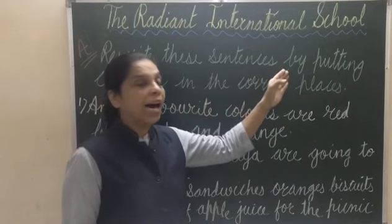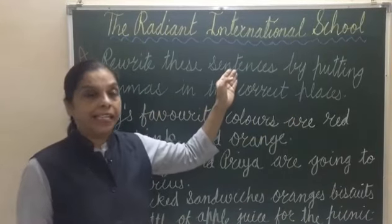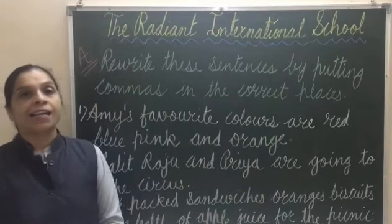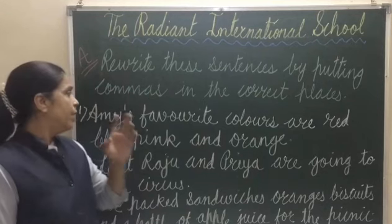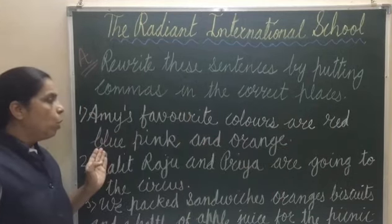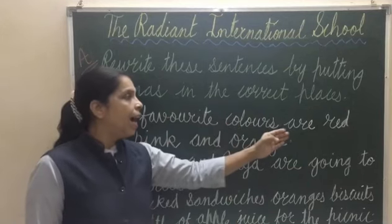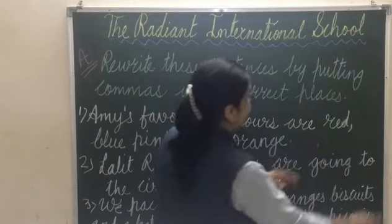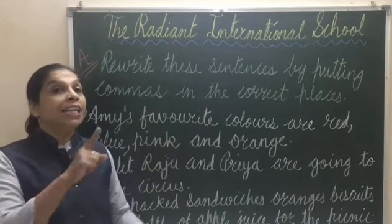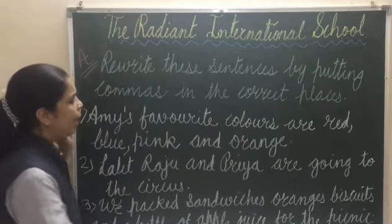Now we will go to our Exercise A: Rewrite these sentences by putting commas in the correct places. Yeh exercise mein correct places pe comma deni hai. Number one: Amhi's favourite colors are red, blue, pink, and orange. Pink ke baad comma nahi aayega because orange is the last item, so here it will come 'and.'